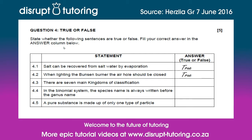4.3 is a Life and Living question. It reads: there are seven main kingdoms of classification. This is not correct — there are actually five main kingdoms of classification, which are Kingdom Animalia, Plantae, Fungi, Protista, and Monera. The number seven denotes the number of levels in each kingdom of classification. So there are five kingdoms but seven levels in each of the kingdoms.